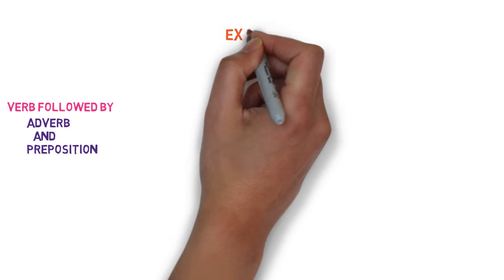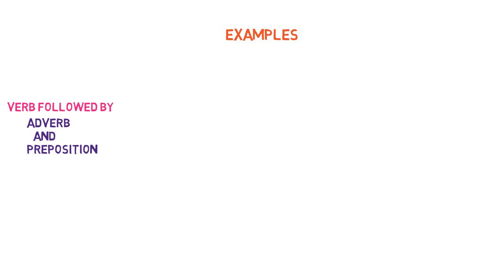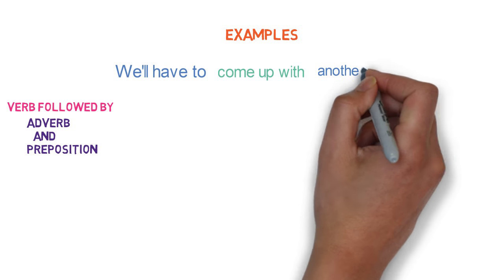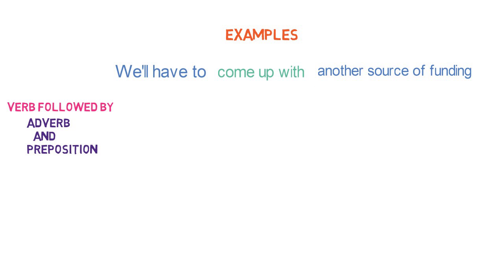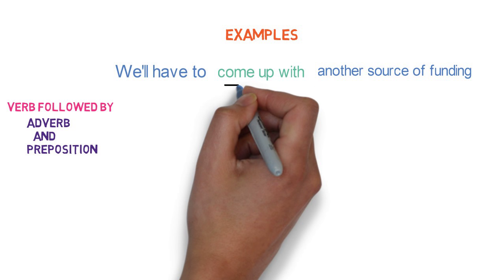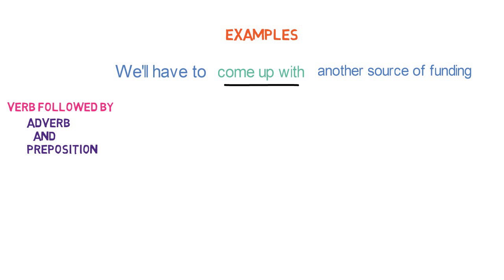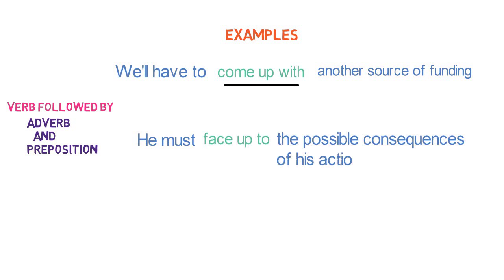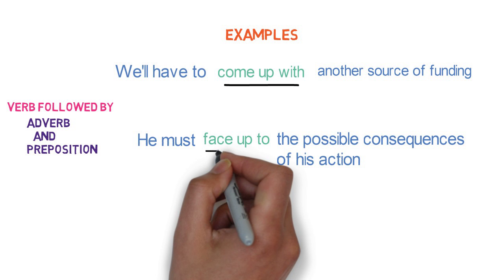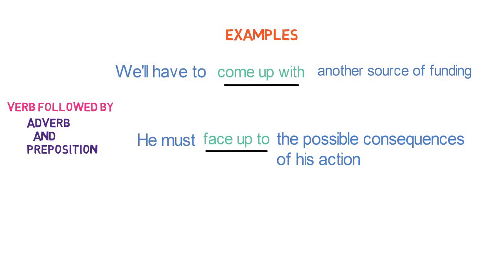Now, let's see examples of verb followed by adverb and preposition. 'We will have to come up with another source of funding.' Here, 'come up with' is a phrasal verb having the combination of verb, adverb, and preposition. Let's look into the next example. 'He must face up to the possible consequences of his actions.' Here, 'face up to' is a phrasal verb having combination of verb, adverb, and preposition.